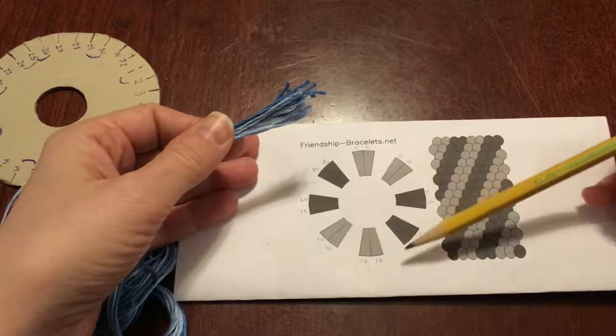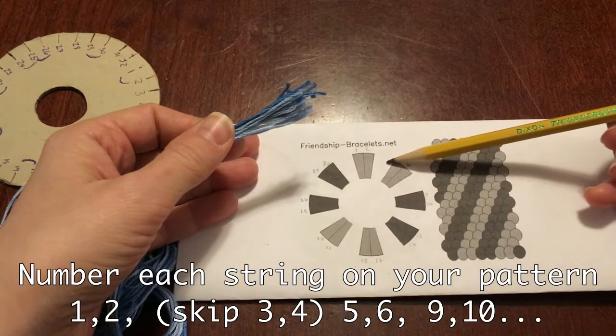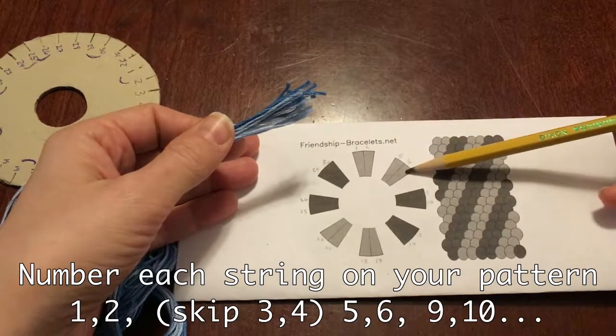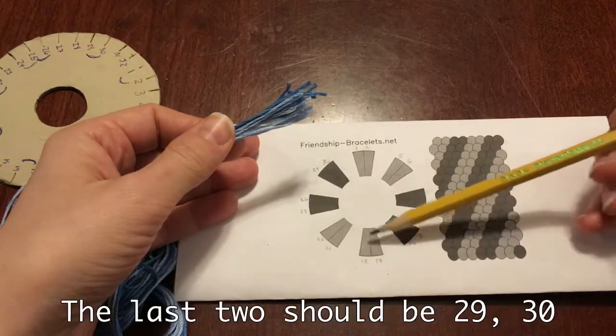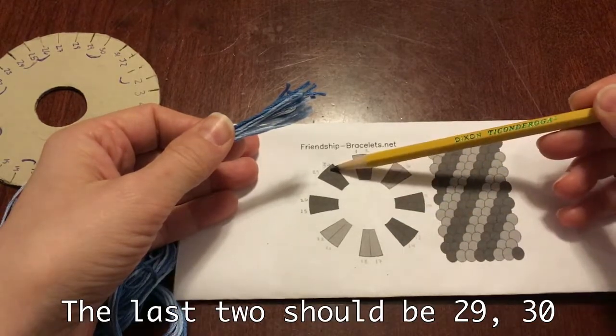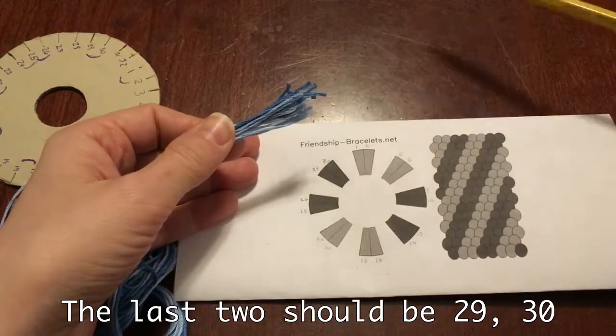Number your pattern. Start with one, two, skip three, four, continue five, six. Each white space should skip two numbers so that when you get around, your last one is 29 and 30. This will help you set up your pattern.